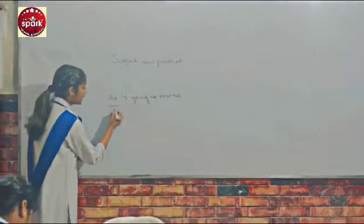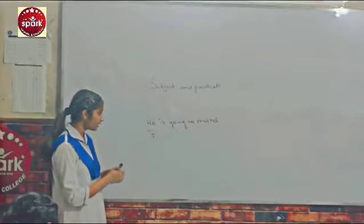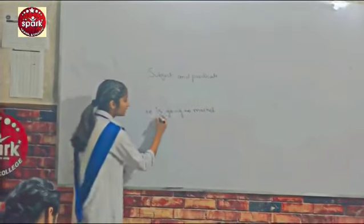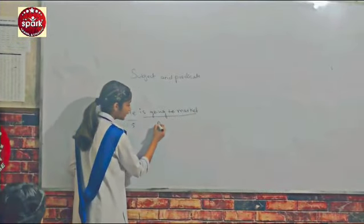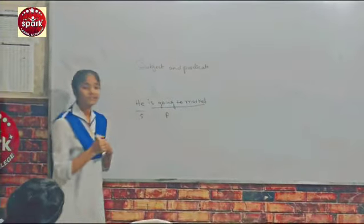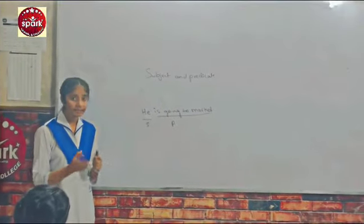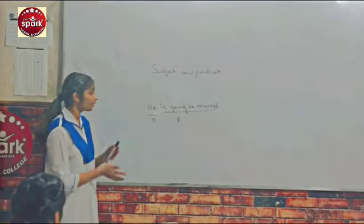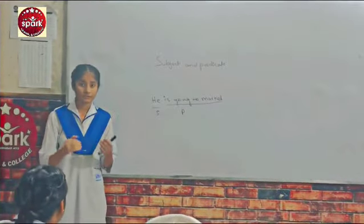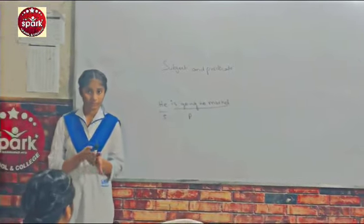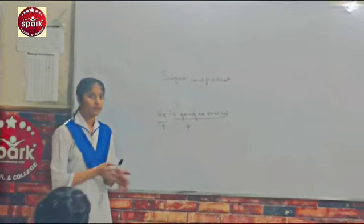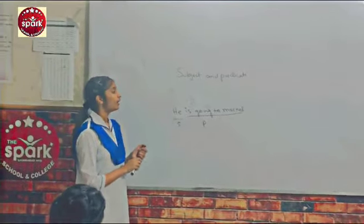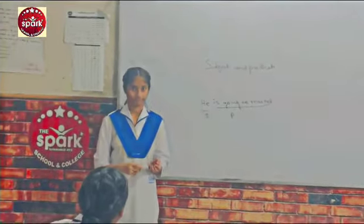He is doing an action — going to market — and this is the predicate, because it gives full detailed information about what the subject is doing. It means the predicate is the part of a sentence which gives us information about the subject. Very good.